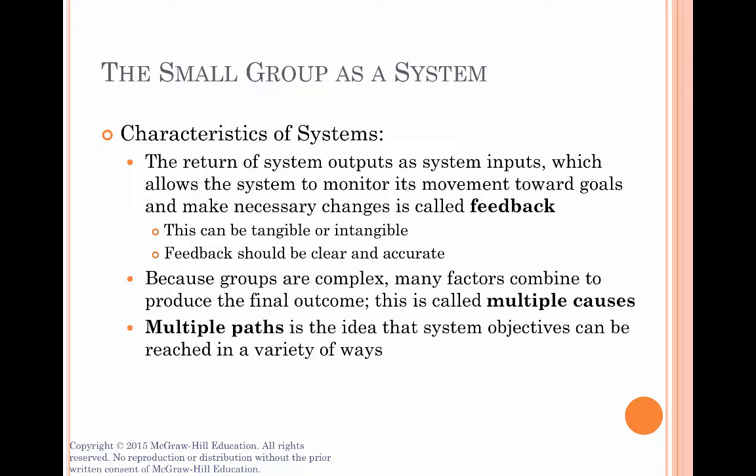Let's talk about the concepts of multiple causes and multiple paths. Systems tend to be complex organisms or entities. With groups, outcomes tend to be dependent on many, many factors or causes — you generally can't pinpoint one single reason as the cause for the success or failure of a group's project. That's called multiple causes. A related concept is multiple paths: there's not necessarily only one correct way to achieve any goal. Any objective can often be reached in different ways, and it's the ways that a group decides to proceed that contribute to the uniqueness and effectiveness of that group.